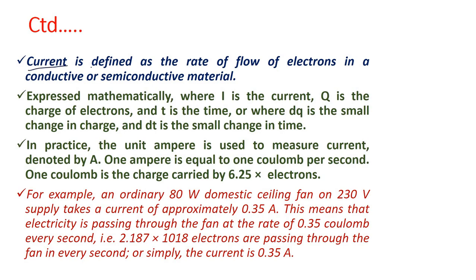The conventional direction of current flow is opposite to the flow of negative charges, that is, the electrons. Current is defined as the rate of flow of electrons in a conductive or semiconductor material, mathematically expressed as I = dQ/dt, where I is current, Q is charge, and T is time. One ampere is equal to one coulomb per second. One coulomb is the charge carried by 6.25 × 10¹⁸ electrons.